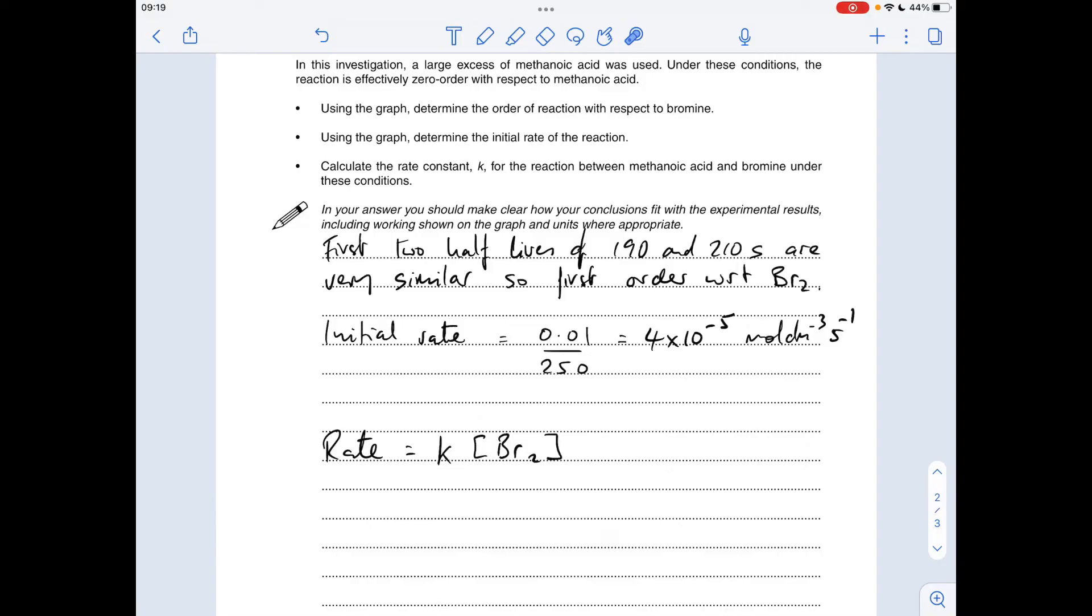So we just need to rearrange for K and then put in our rate that we've just calculated and the initial concentration of bromine, and that will give us a value for K. So using my initial rate of 4 times 10 to the minus 5, the initial concentration of bromine is 0.01, so we're getting a K value of 4 times 10 to the minus 3.